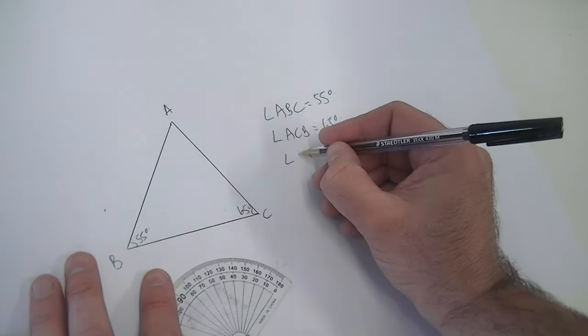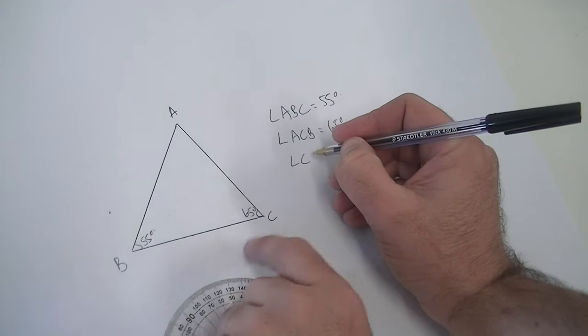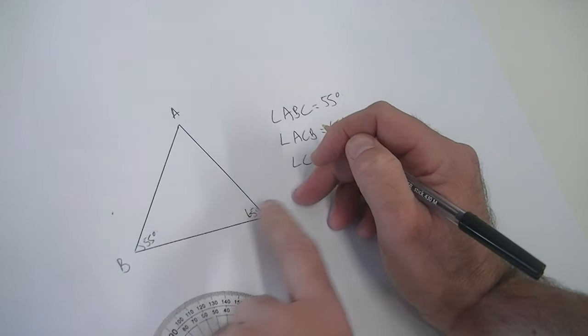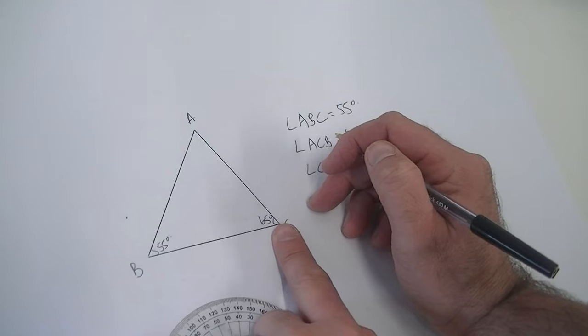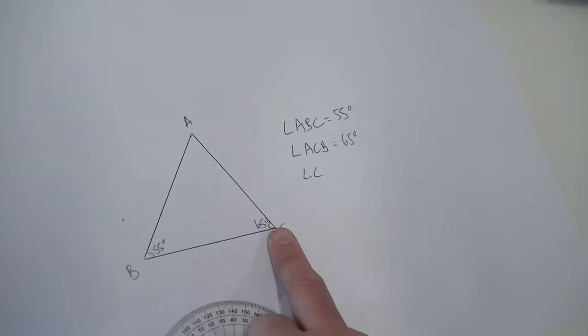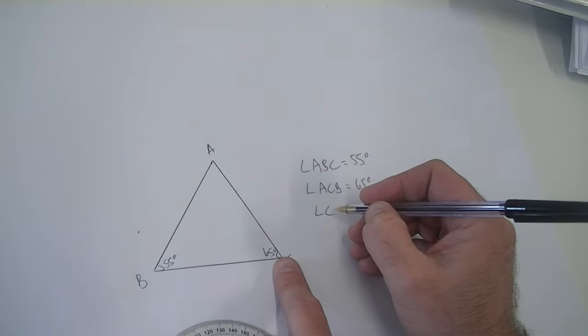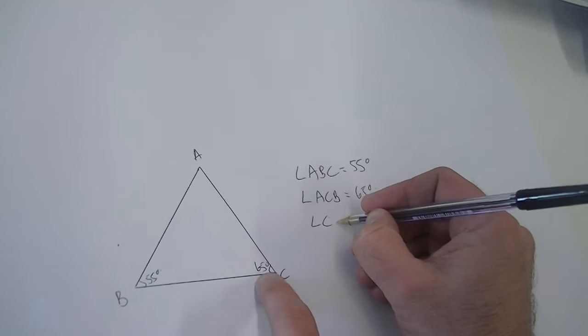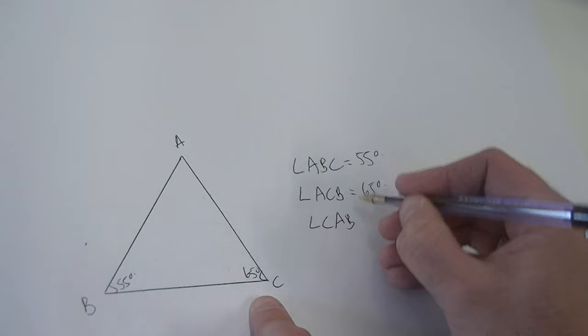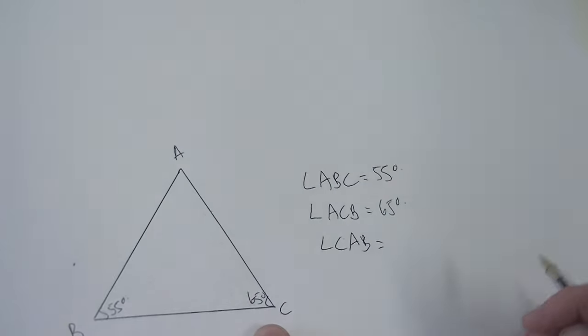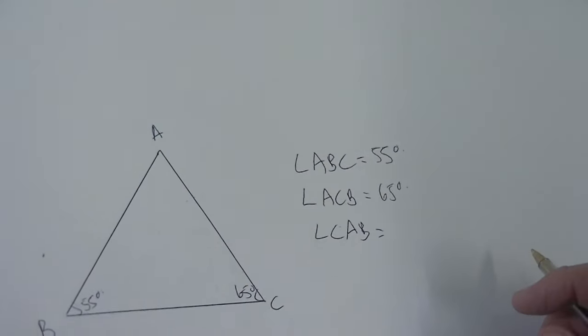They add up to 180, every triangle adds up to 180 degrees. Okay so I've got 55 and 65, so that gives me 120. Yeah, so 120 and I've got to have 180 in total. Yes. Okay so I've got a pretty good idea what CAB is going to be. I'm guessing it's going to be 60 degrees. I reckon you're guessing pretty close.